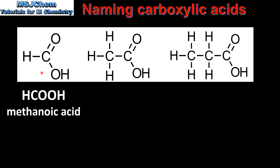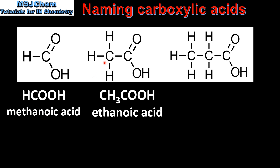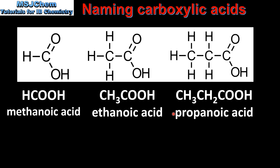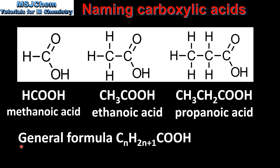Next we look at the carboxylic acids. We'll start with a carboxylic acid with one carbon atom, which is methanoic acid. Moving on to two carbon atoms, ethanoic acid, and then three carbon atoms, propanoic acid. The general formula for the carboxylic acids is CnH(2n+1)COOH.